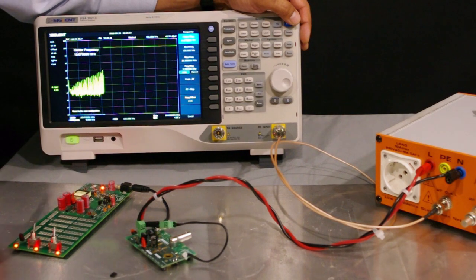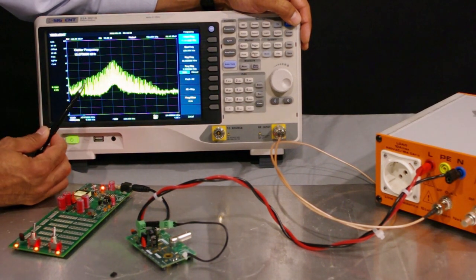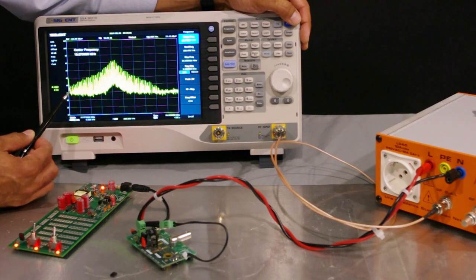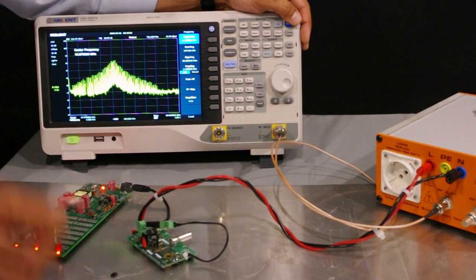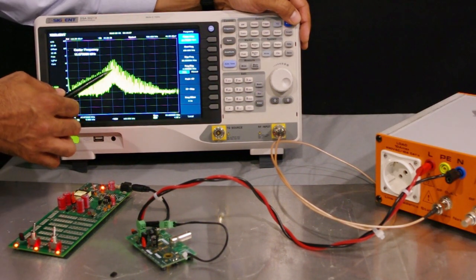You will see that its impact, even with the filter—this is the yellow trace now—even with the differential mode filter, I still have big noise because this is common mode noise and this is a differential mode filter, so it is not doing anything to the common mode.